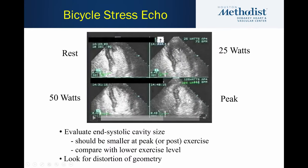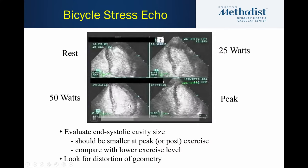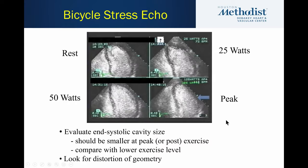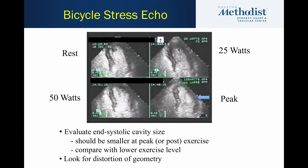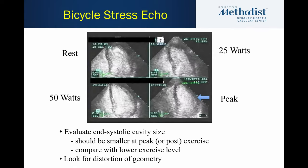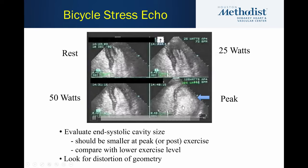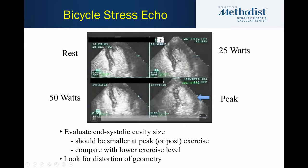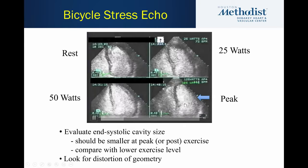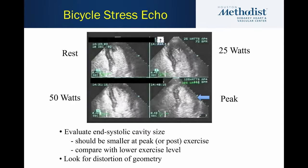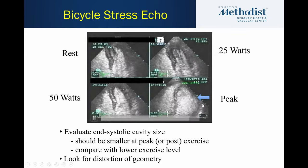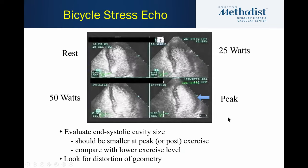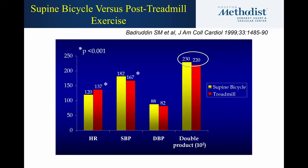In this four-chamber view at rest, there's a normal EF that actually gets better at 25 watts and better still at 50 watts — the increasing function you'd expect with exercise. But then at peak, you can see regional dilation particularly in one region. Looking at the wall motion, the septum is doing okay and it's really the lateral wall that is having the problem — a case of significant ischemia in a patient with a large OM-circumflex type lesion.